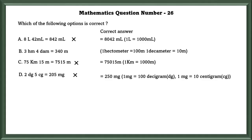In option B, 1 hectameter is equal to 100 meters and 1 decameter is equal to 10 meters, and the correct answer is 340 meters. So, B is correct.